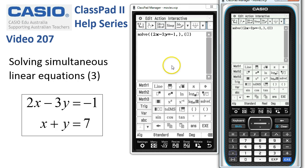A comma to tell ClassPad this is the second item in the list, which is the other equation, x plus y is equal to 7.